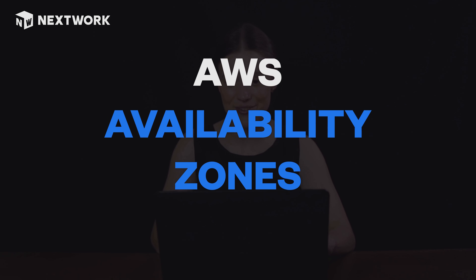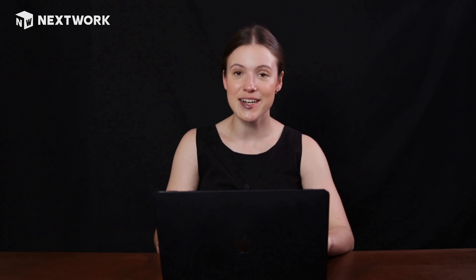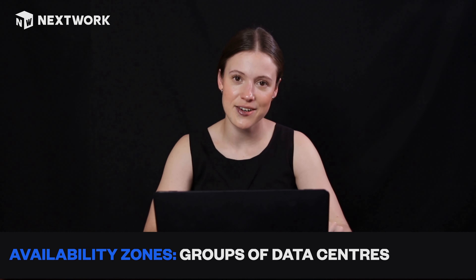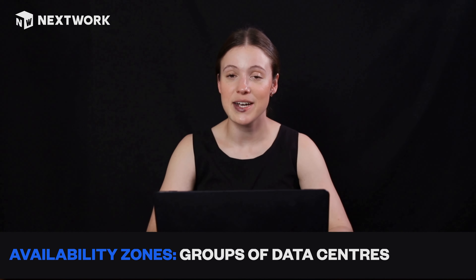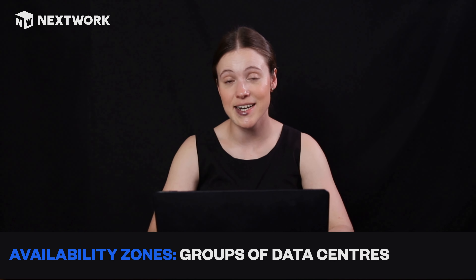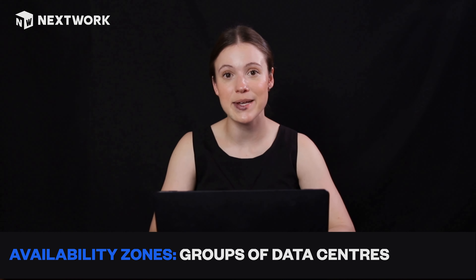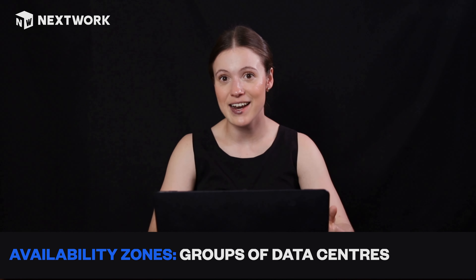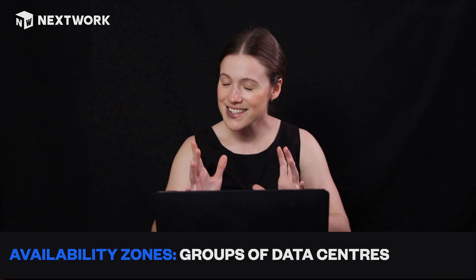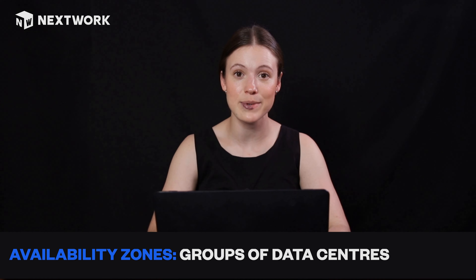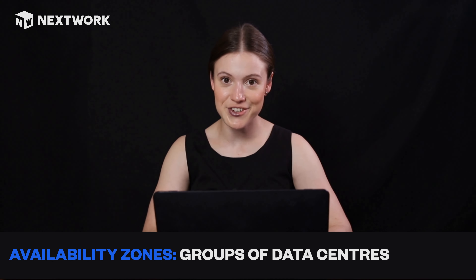This brings us to availability zones. Availability zones exist within a region — one region is going to have lots of different availability zones, and each availability zone is a single or a group of data centers. Availability zones are located at least 10 miles apart, mainly because if there was a large natural disaster, you don't want all of your availability zones going out at once. AWS recommends always running at least two availability zones per region, just in case something goes wrong.